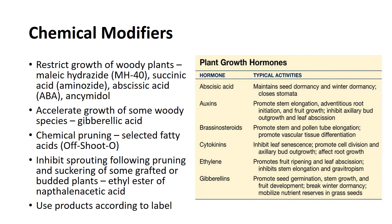Maleic hydrazide MH40, succinic acid commonly known as aminozide, abscisic acid ABA, ancymidol, and other chemical growth regulators have been used to restrict the growth of woody plants.